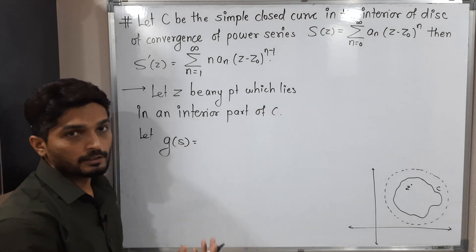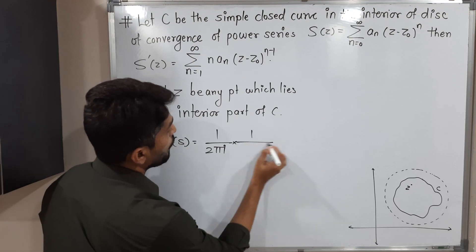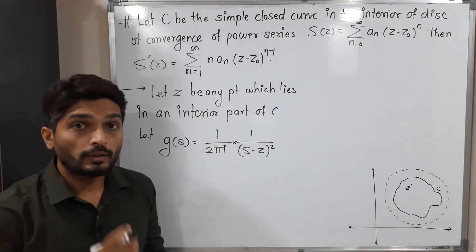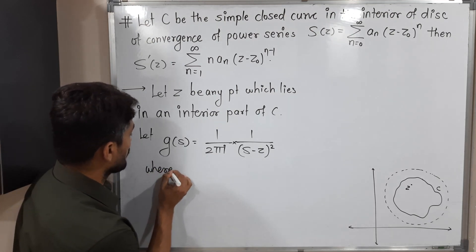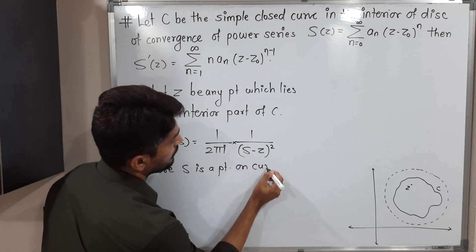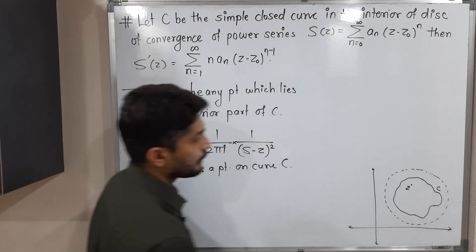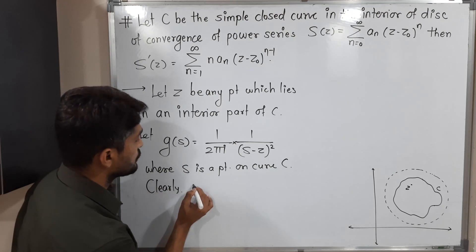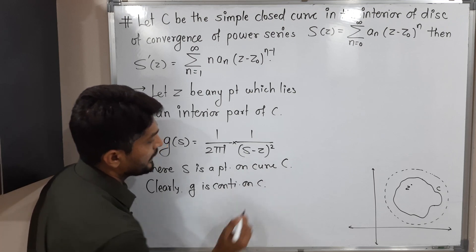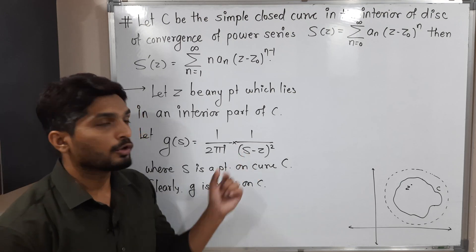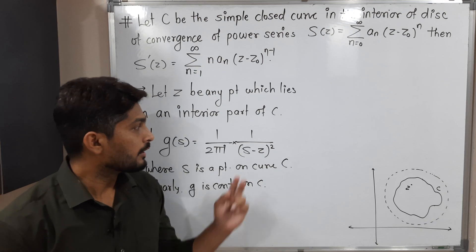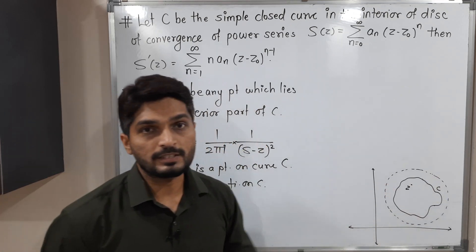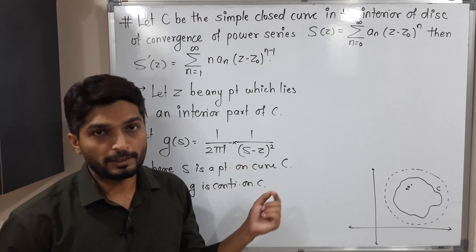Define g(s) = 1/(2πi) · 1/(s − z)², where z is the interior point we have taken and s is any point on the curve C. Clearly g is continuous on C, because g would be discontinuous only if the denominator is zero, i.e., if s equals z. But z lies in the interior of C and s is on the boundary, so they can never be equal, and the denominator is never zero.